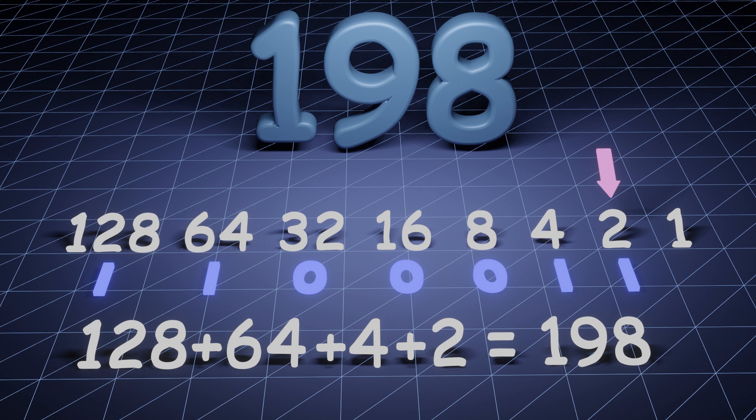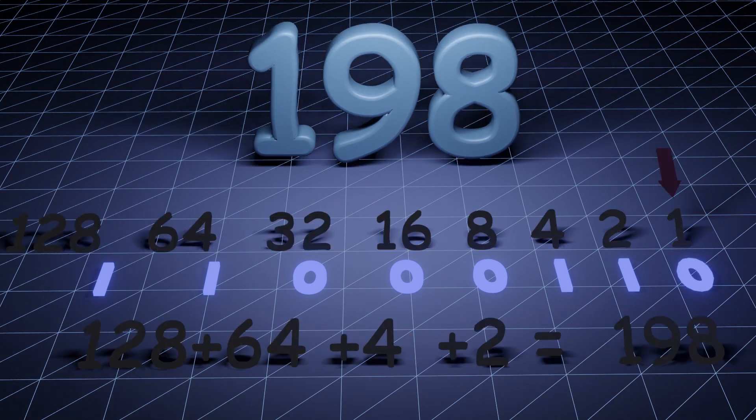Because we've completed our sum, we don't need any more values and we can write binary 0s below the rest of the values in the sequence. This is now our complete binary number.